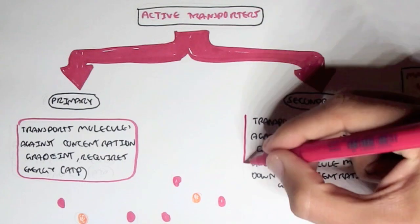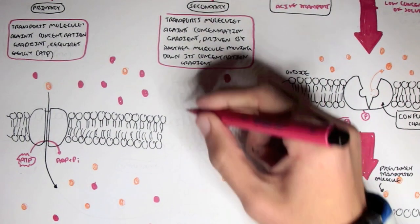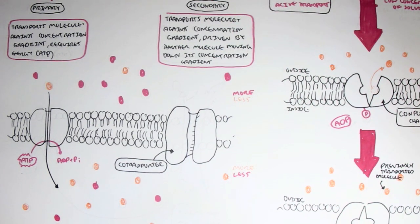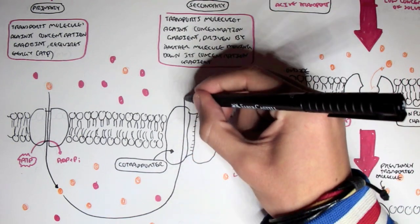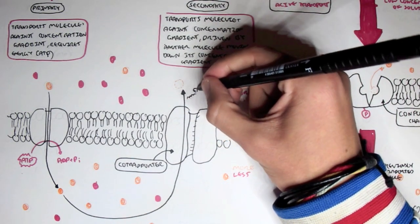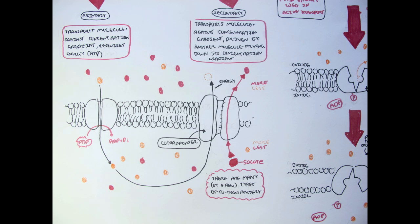Secondary active transport transfers molecules against their concentration gradient, but it is driven by another molecule moving down its concentration gradient. For example, using a co-transporter: an orange solute highly concentrated inside the cell will move back down its concentration gradient, releasing energy. This energy allows a red solute, highly concentrated on the outside, to move up against its concentration gradient. So the red solute moves against its concentration gradient using the energy provided by the orange solute moving down its concentration gradient.